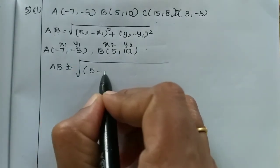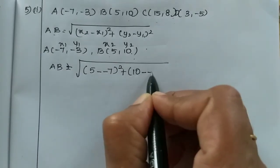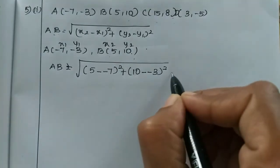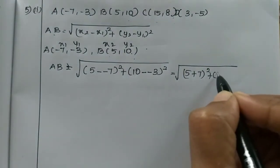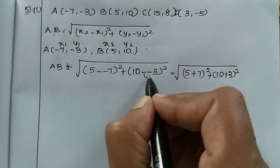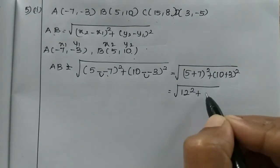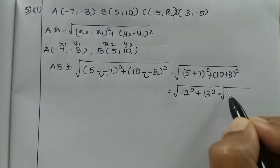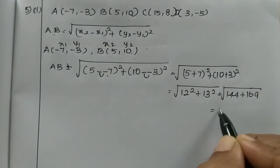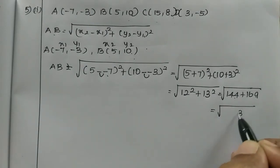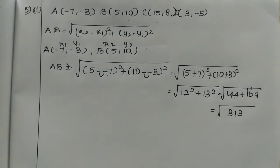X2 is 5 minus x1 is minus 7, whole square, plus y2 is 10 minus y1 is minus 3, whole square. Which equals 5 plus 7 whole square plus 10 plus 3 whole square. Now 5 plus 7 is 12, so 12 squared plus 13 squared, which is 144 plus 169 equals root of 313.